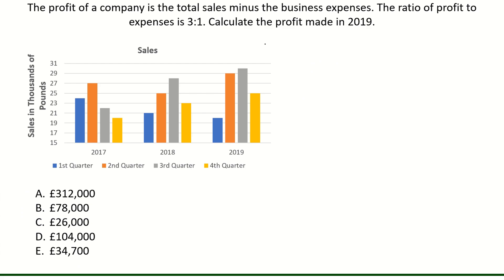The profit of a company is the total sales minus the business expenses. The ratio of profit to expenses is 3 to 1. Calculate the profit made in 2019. We have this chart here and it says the sales in thousands of pounds. We have the three different years and each of the colors represents each quarter of the year.